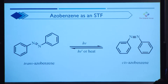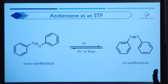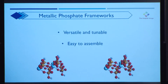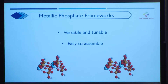There are two specific ways you can improve the delta H value of azobenzene: you can increase it downwards by decreasing the energy of trans-azobenzene, or you can increase delta H upwards by raising the energy of cis-azobenzene. My project specifically chose to simulate metallic phosphate frameworks to increase the molecular energy density of azobenzene. We chose these frameworks for two reasons: their versatility and tunability — meaning there are many variables you can adjust to increase delta H — and second, they're easy to assemble, which is important for future experimental designs.